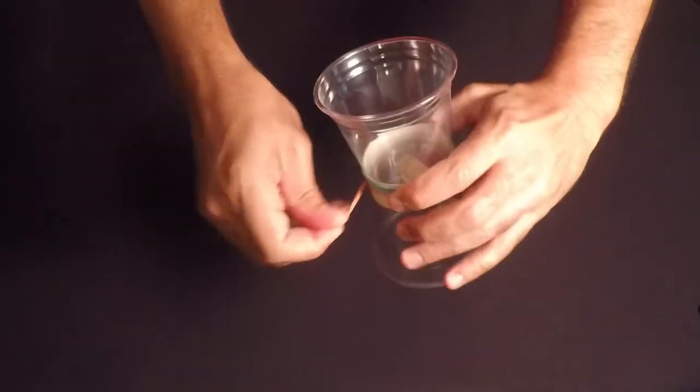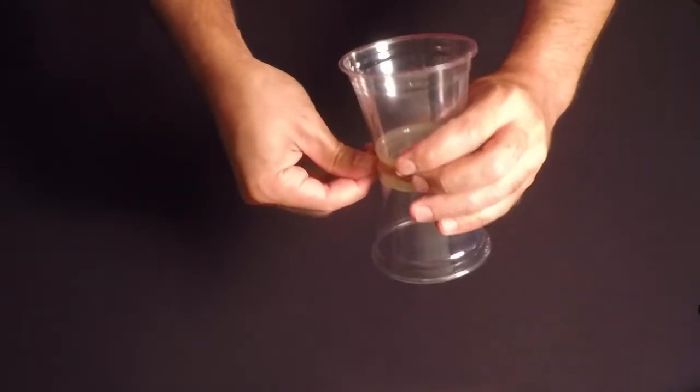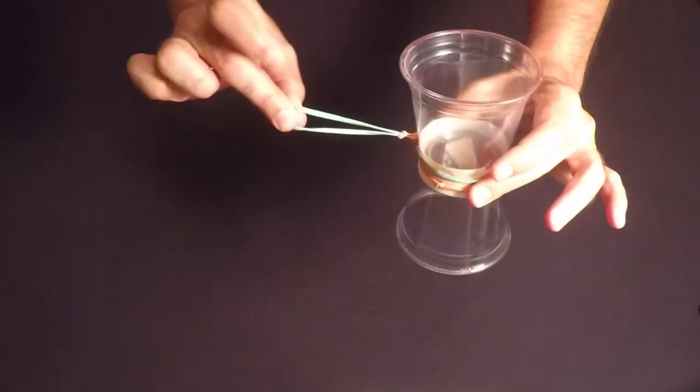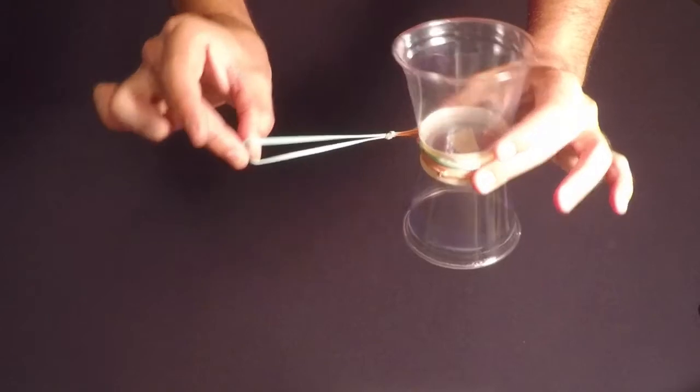Keep stretching as you wrap the rubber band around the flyer. When you get almost all the way to the end, pinch the free end of the rubber band between your thumb and index finger.